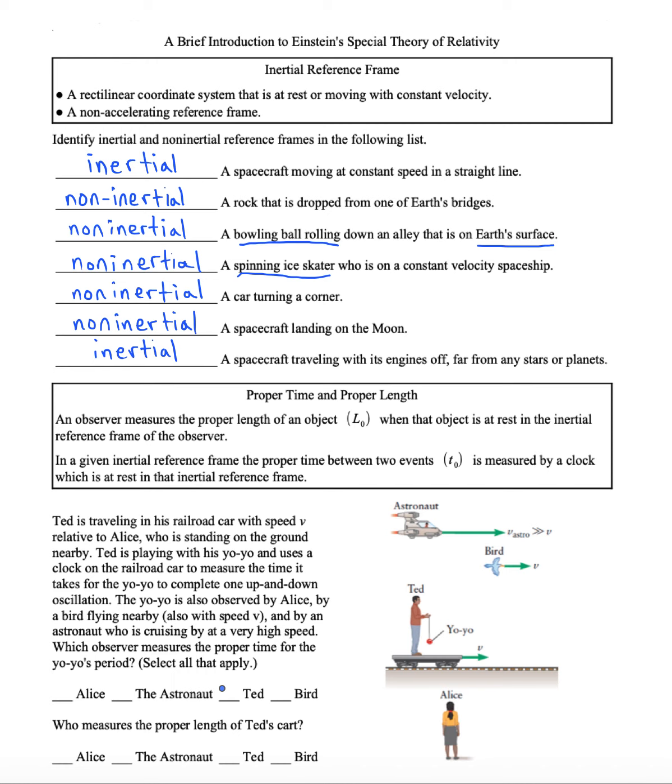So Ted can definitely measure the true time of the yo-yo's period because he is in the inertial reference frame. This is because the yo-yo is in his reference frame. Could Alice measure the proper time of the yo-yo's period? Now it used to be believed in Sir Isaac Newton's day that time would be absolute. That if one person measured time to be one thing, then everybody else in the universe would measure the time to be the same. But Einstein's relativity showed that this wouldn't actually be the case. And we'll get into why shortly. But for now, all we have to know is that Alice cannot measure the proper time of that yo-yo. It's because she is not in the reference frame that the yo-yo is being carried in.